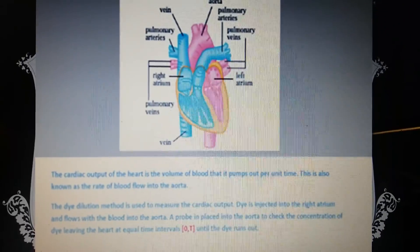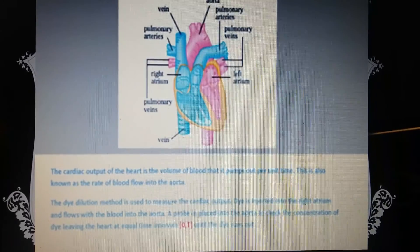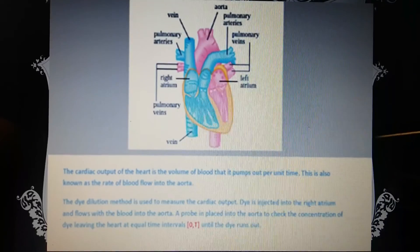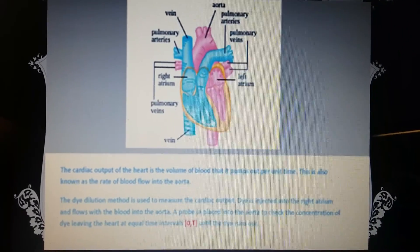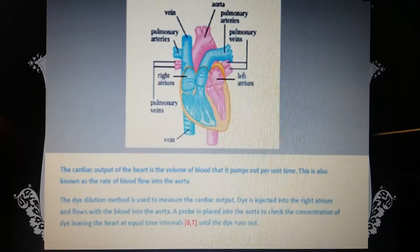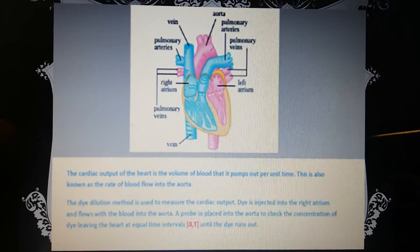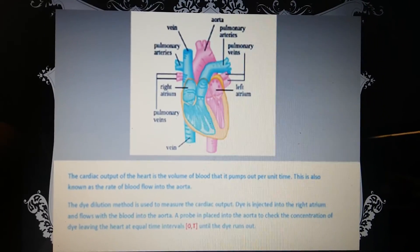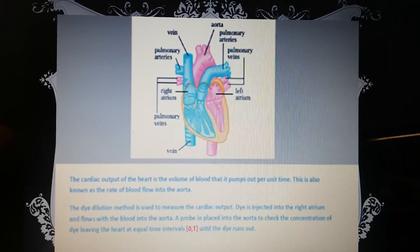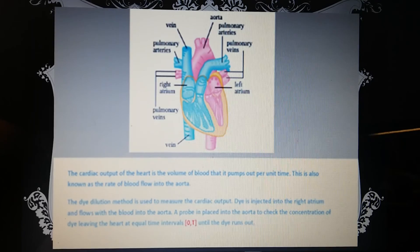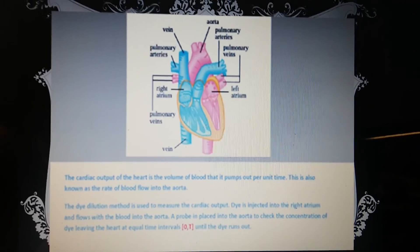Now the cardiac output of the heart is the volume of blood that it pumps out per unit time. This is also known as the rate of blood flow into the aorta. The dye dilution method is used to measure the cardiac output. Dye is injected into the right atrium and flows with the blood into the aorta. A probe is placed into the aorta to check the concentration of dye leaving the heart at equally timed intervals until the dye runs out.